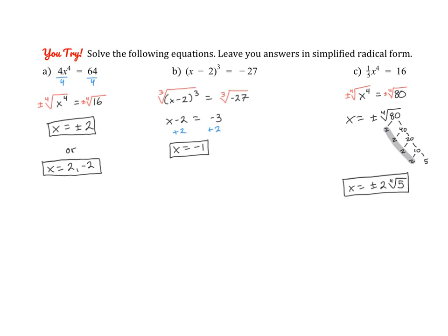For part C, you do need to multiply both sides by 5 and then take the plus or minus fourth root. So you get plus or minus fourth root of 80, which you can simplify. And it gives you the plus or minus 2 fourth root of 5. So make sure if you're left with a radical, simplify it as much as you can.